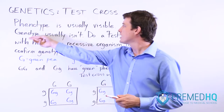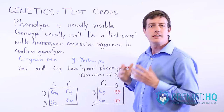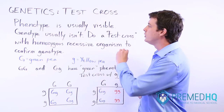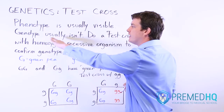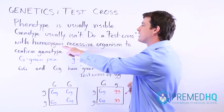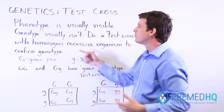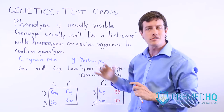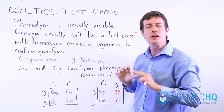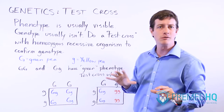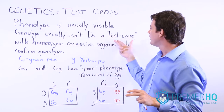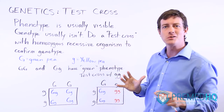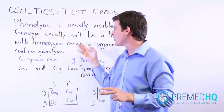Because genotype isn't always obvious, we do a test cross. A test cross is an experimental procedure where you breed the organism of unknown genotype with something that is homozygous recessive in order to confirm what the genotype of the unknown is. Homozygous recessive is easy to identify because it's the only way you exhibit the recessive phenotype, so it's usually easy to find an organism to use for the test cross.